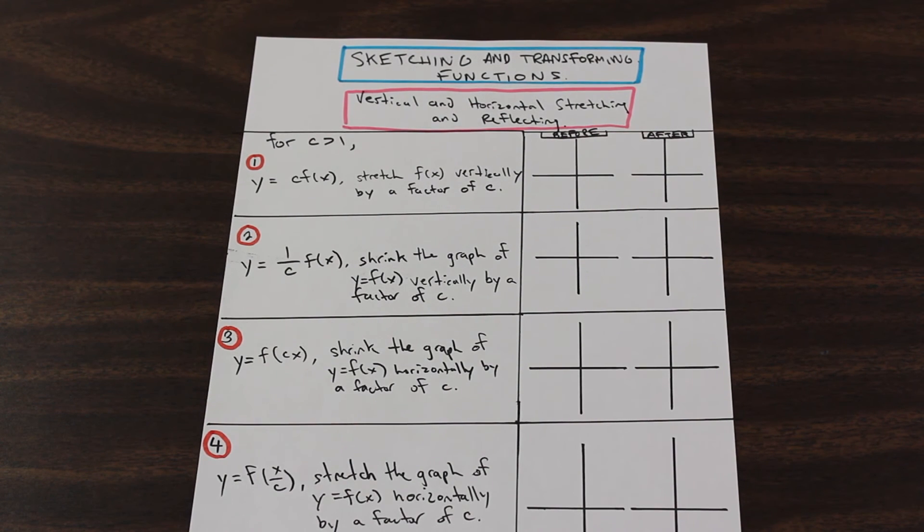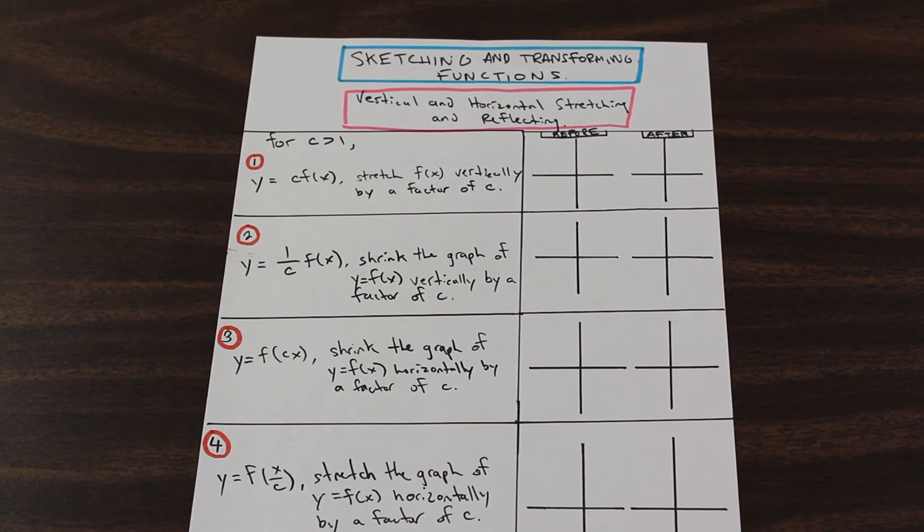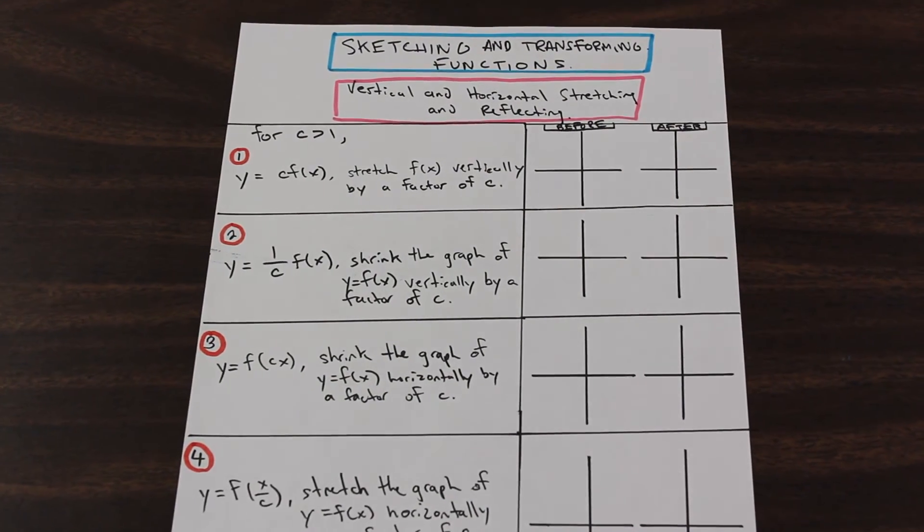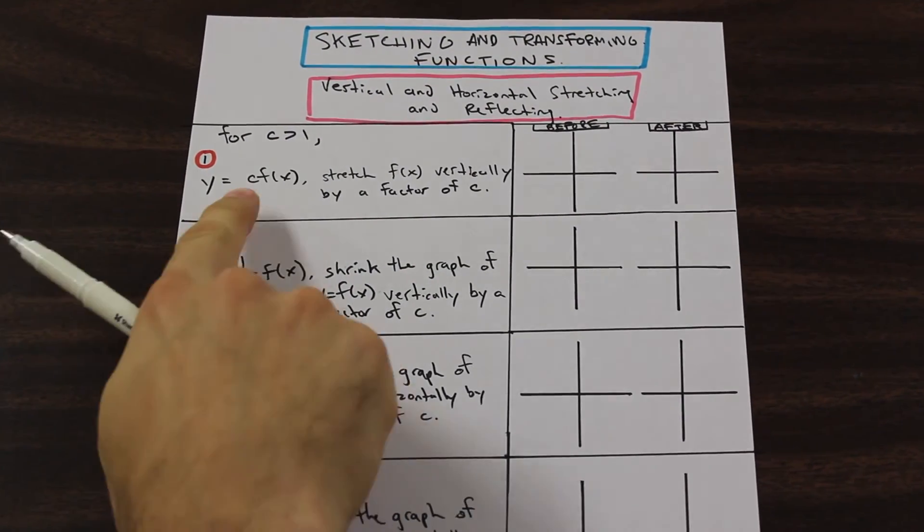So let's take a look at number one. So we have y equals c, where c is just a constant here. Don't get confused with c. C is just a number greater than one. It could be anything. So if we have a constant times the entire function.